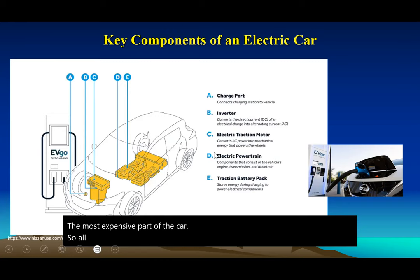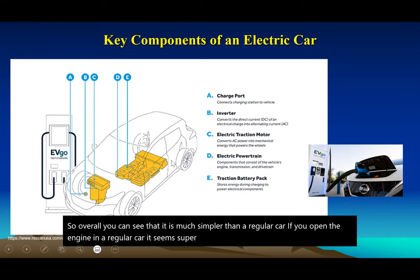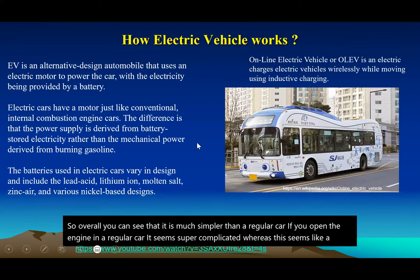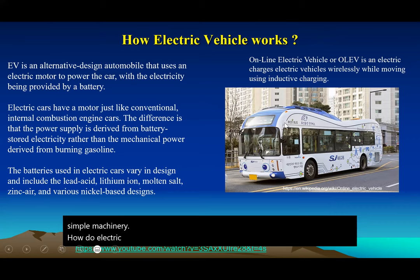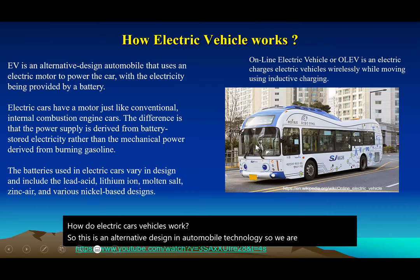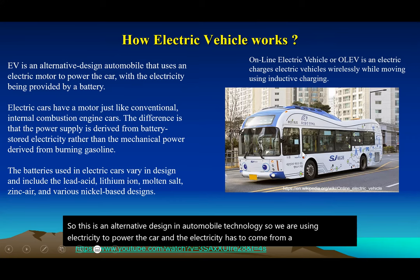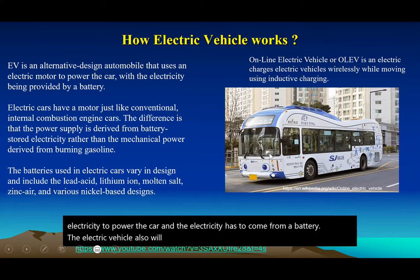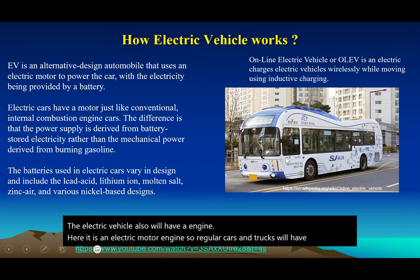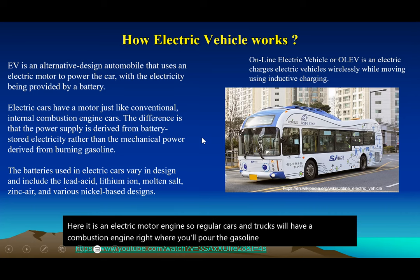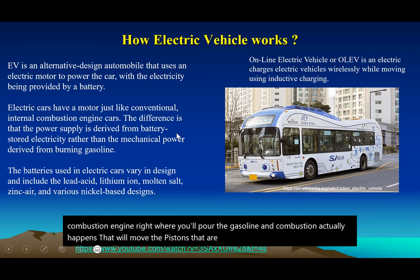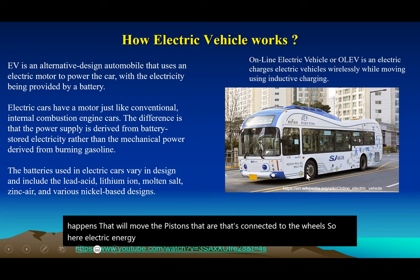Overall, you can see an electric vehicle is much simpler than a regular car. If you open the engine of a regular car it seems super complicated, whereas an EV seems like simple machinery. Electric vehicles use electricity to power the car, coming from a battery. The electric vehicle has an electric motor engine, whereas regular cars have a combustion engine where gasoline combustion moves pistons connected to the wheels.